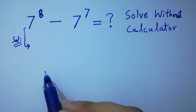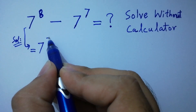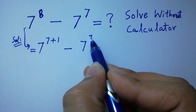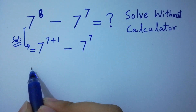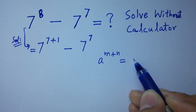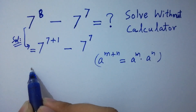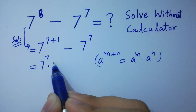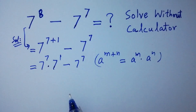It can be written as 7 to the power 7 plus 1 minus 7 to the power 7. Since 7 plus 1 is 8, and as we know a to the power m plus n equals a to the power m times a to the power n, then it will be 7 to the power 7 times 7 to the power 1, minus 7 to the power 7 as it is.